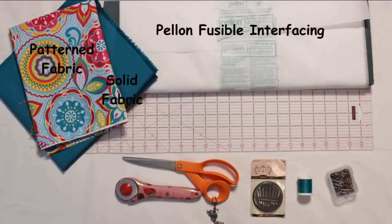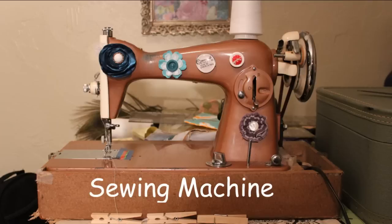For this project you will need a half yard of printed fabric, a yard of coordinating fabric, pellon fusible interfacing, a ruler, cutting tools, sewing needles, thread, straight pins and a sewing machine.